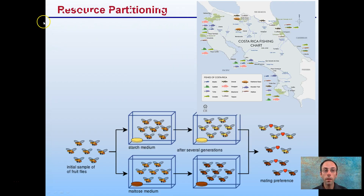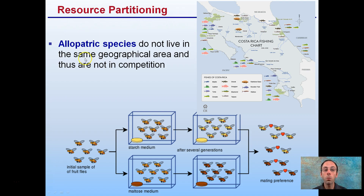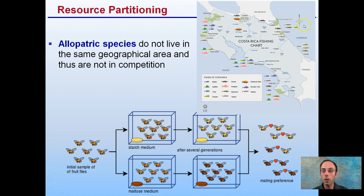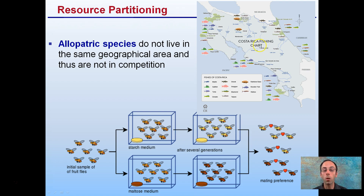In contrast, we have resource partitioning with allopatric species. These do not live in the same geographic area and thus do not compete. For example, there are different fish species in the Caribbean versus the Pacific Ocean near Costa Rica. This is an example of allopatric species because they don't live in the same geographic area and therefore do not directly compete with one another.